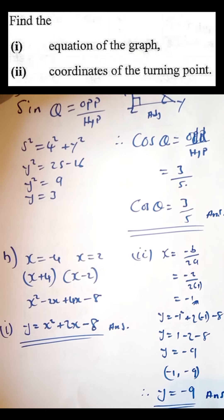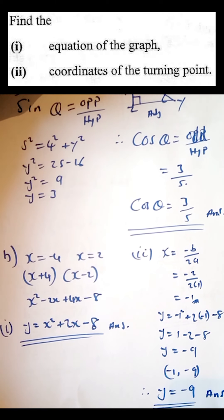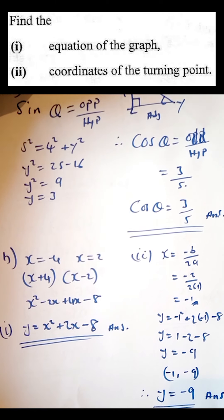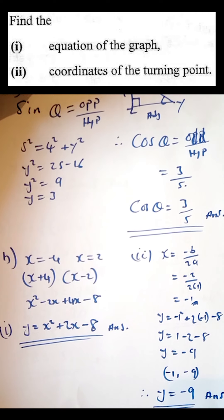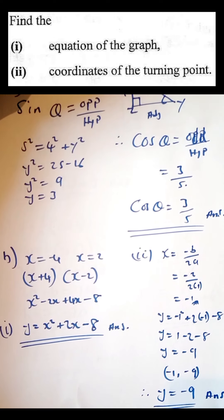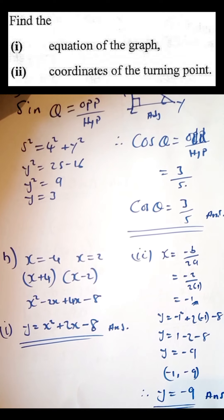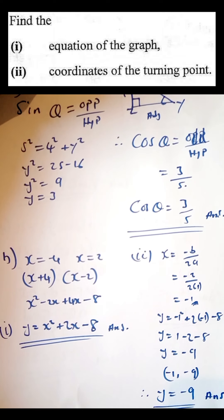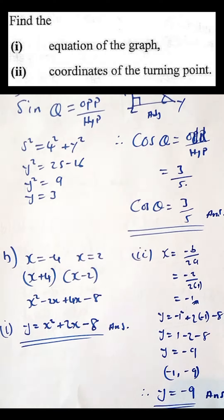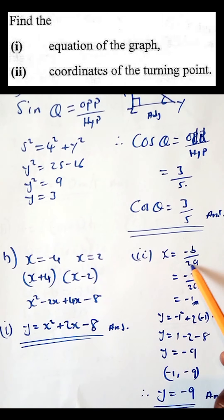The next part asks us to find the coordinates of the turning point. To find the x-coordinate, we use the formula x = -b / 2a.